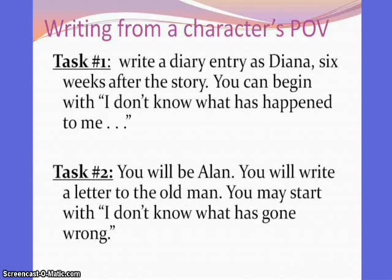If you would instead like to take on Alan's point of view, then you're going to choose task number two. Again, you're writing as Alan, not as yourself. For this task, you're going to be writing a letter to the old man. Alan has given the love potion to Diana, six weeks has gone by, and based on all of the things that have changed in his life, you are writing to the old man to tell him about it, and possibly to ask him for some advice or a favor. You might want to start your letter with something like, 'I don't know what has gone wrong.' Keep in mind that for this writing assignment, you are only doing one task — choosing either task number one or task number two.